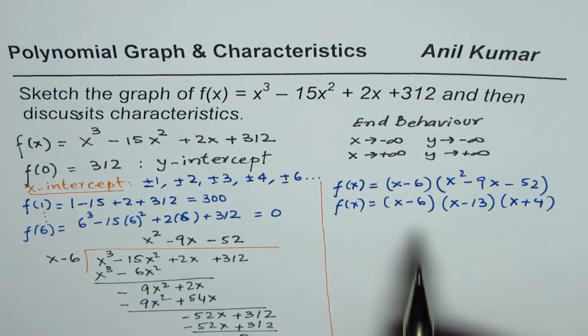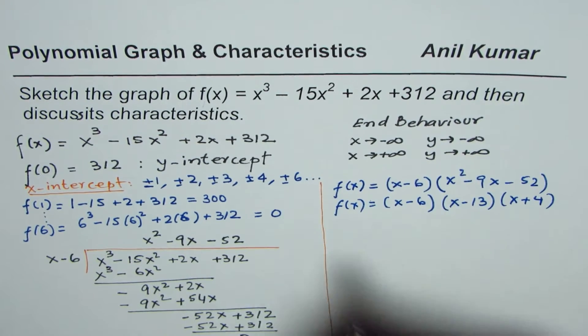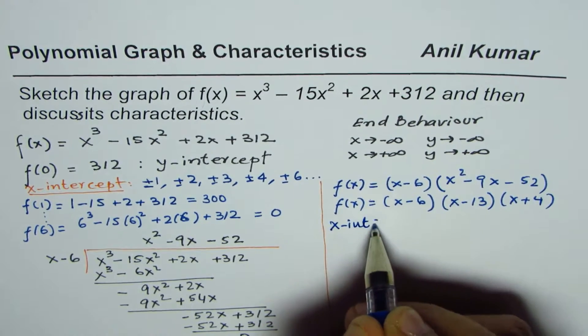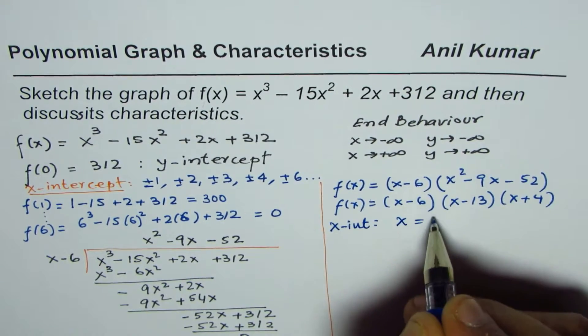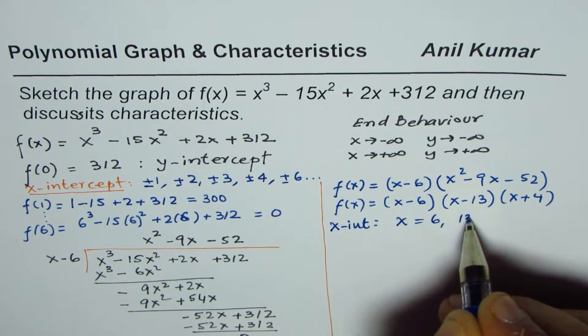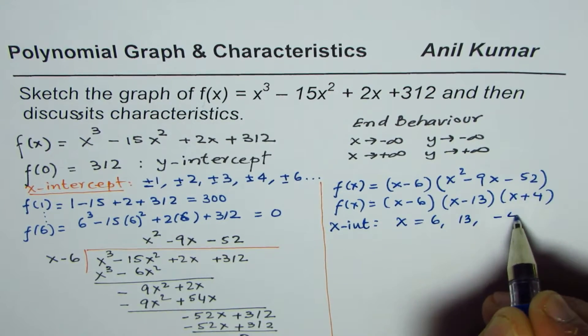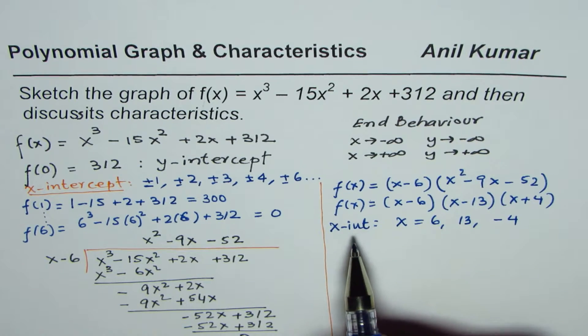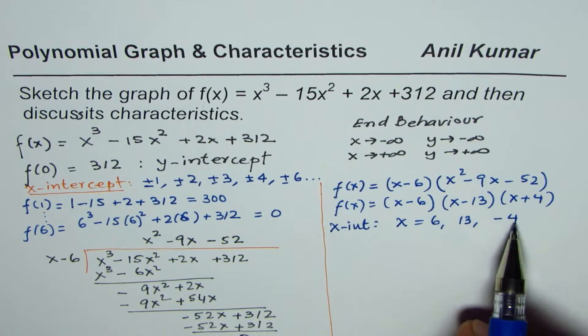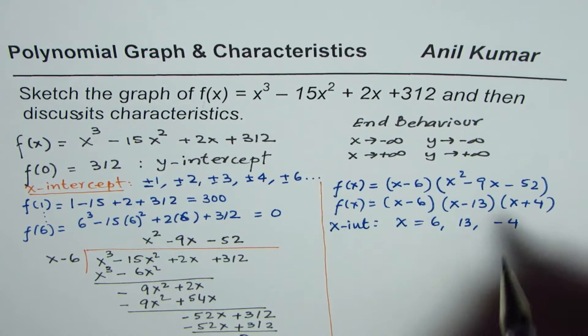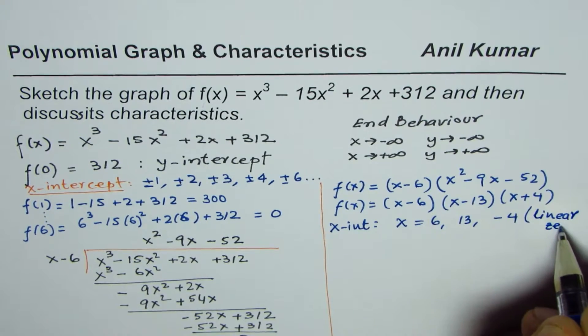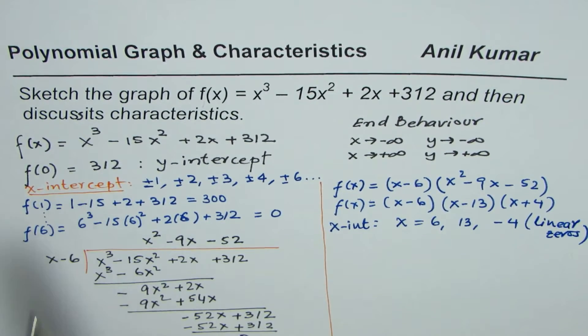Once you have factored, you have all the zeros. So what we have here is zeros or x-intercepts at x = 6, x = 13, and x = -4. So these are the x-intercepts. When we say zeros, we say zeros of order 1, all are linear zeros. So we know y-intercept, linear zeros and end behavior.